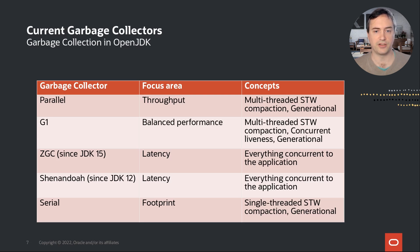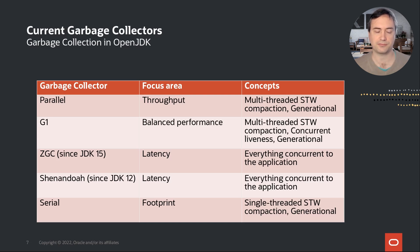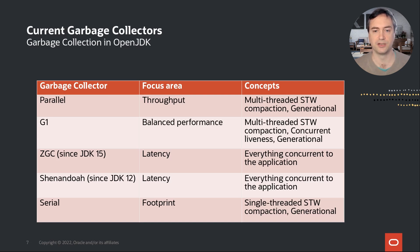Finally, there is SerialGC, which focuses on footprint and startup. It's like a slower, single-threaded, simpler version of ParallelGC. It is typically used for special applications where these properties matter.